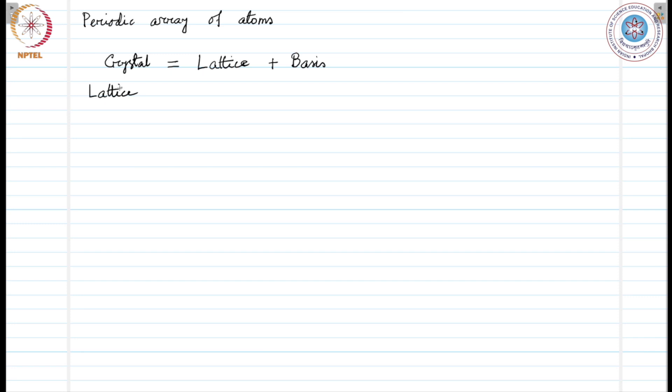The lattice in three-dimensional space may be defined as three translation vectors a1, a2, and a3. These three translation vectors, now we will see how these translation vectors define a lattice.